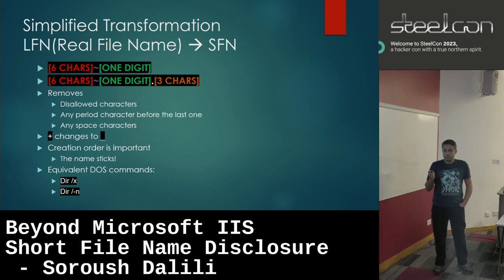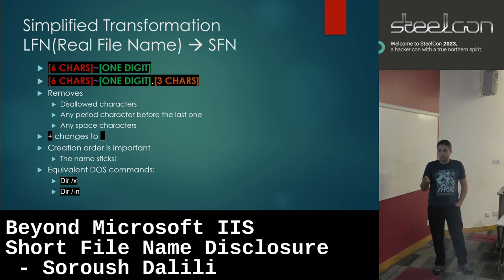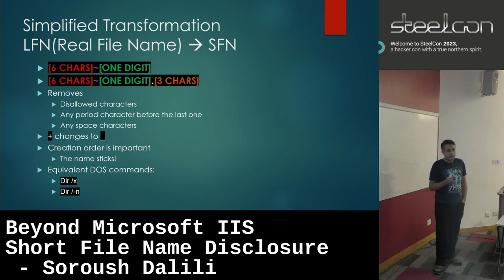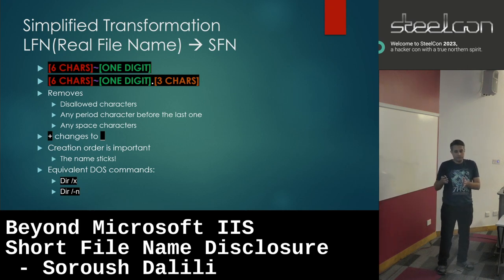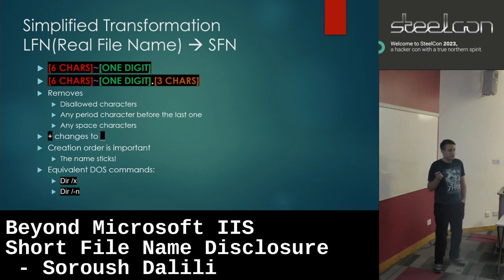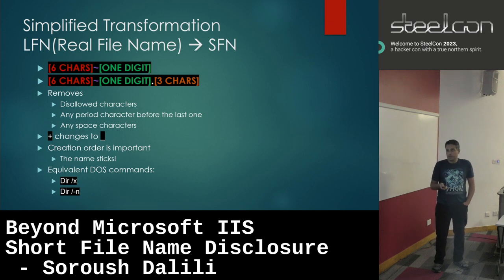When Windows creates short file names and assigns them to a file, it removes characters that are not allowed, and also changes some characters — for example, plus will be changed to underscore. If Windows is going to create another short file name for a similar file, it will increment this number. You can see these yourself in Windows by running one of these commands in CMD, unless you have disabled short file names on your machine.